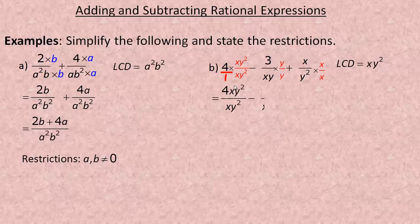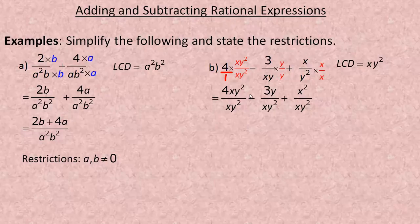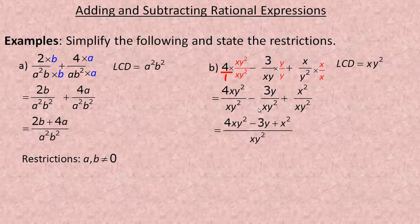After multiplying, the common denominator is xy squared. 4 times xy squared is 4xy squared, 3 times y is 3y, and x times x is x squared. This is subtraction, so we have minus 3y. Since all terms are unlike, we write them over one single denominator: 4xy squared minus 3y plus x squared over xy squared. That is the simplified expression.